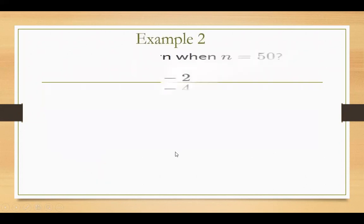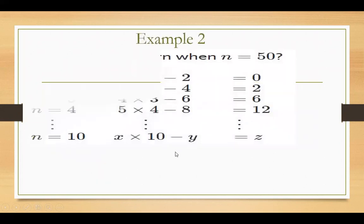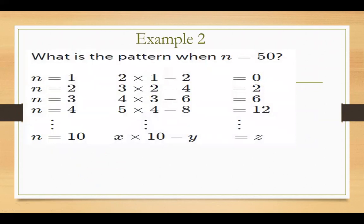Now example number 2 — you can see it on the display. The question asks: what is the pattern when n is equal to 50? We have n=1, n=2, n=3, n=4, n=10 shown. But the question says if n is equal to 50, what will the pattern become?